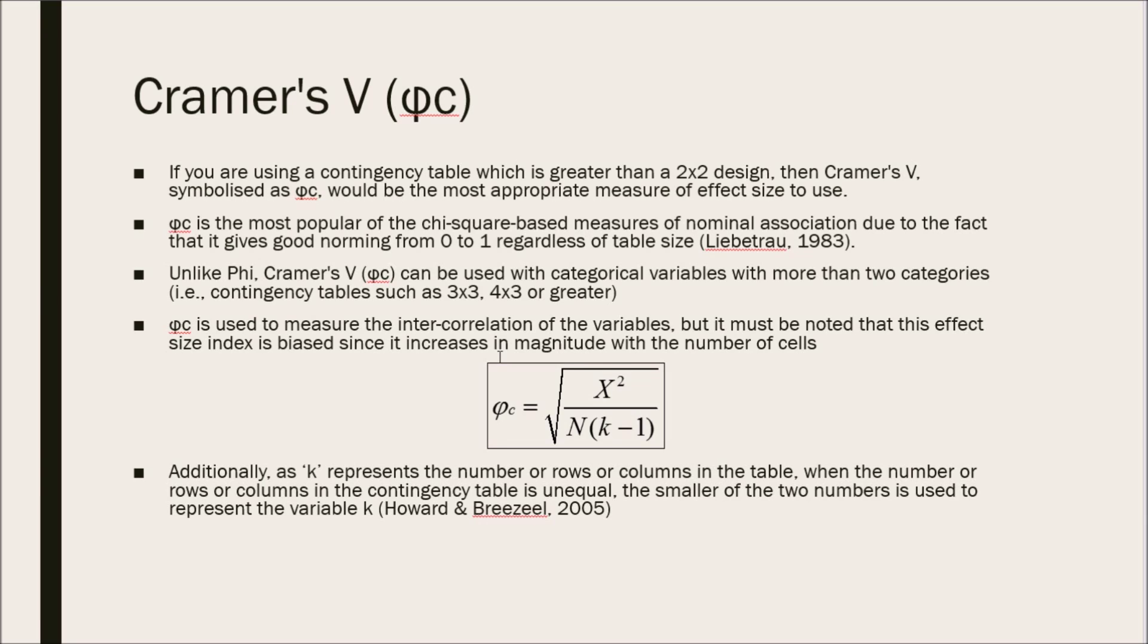And Cramer's V is used to measure the inter-correlation of the variables, but it must be noted that this effect size index is biased since it increases in magnitude with the number of cells.